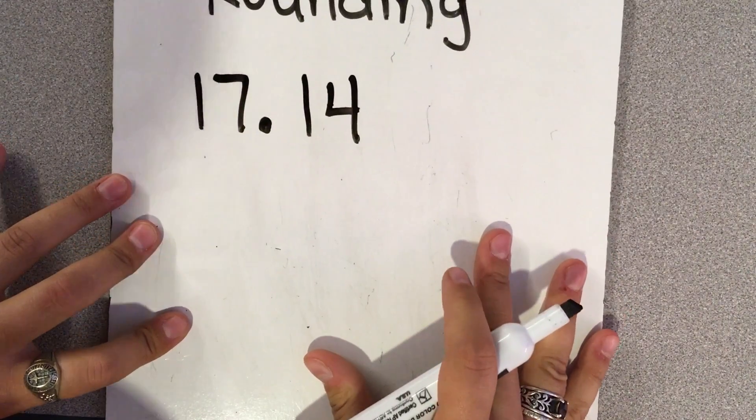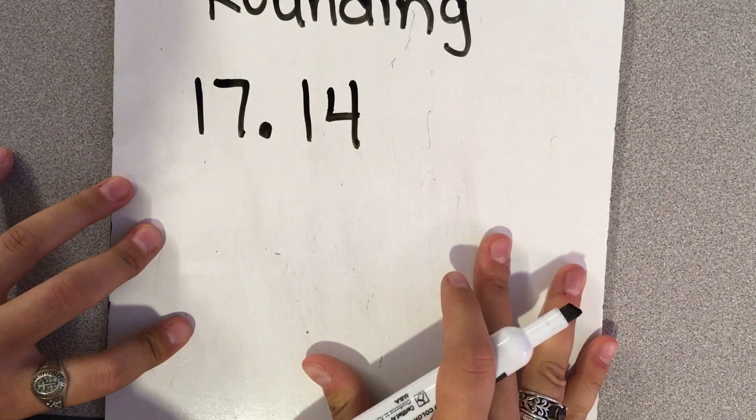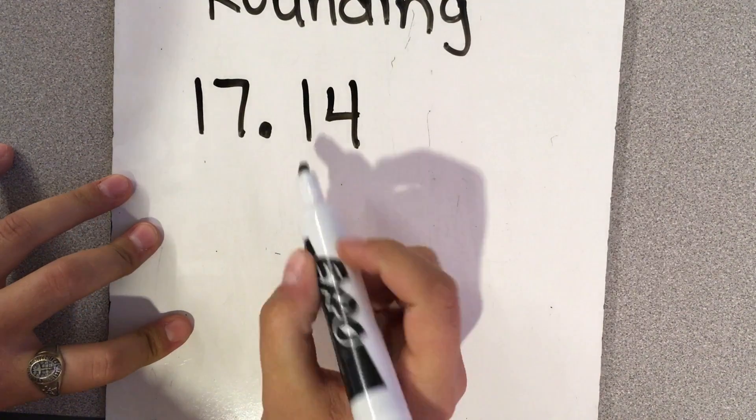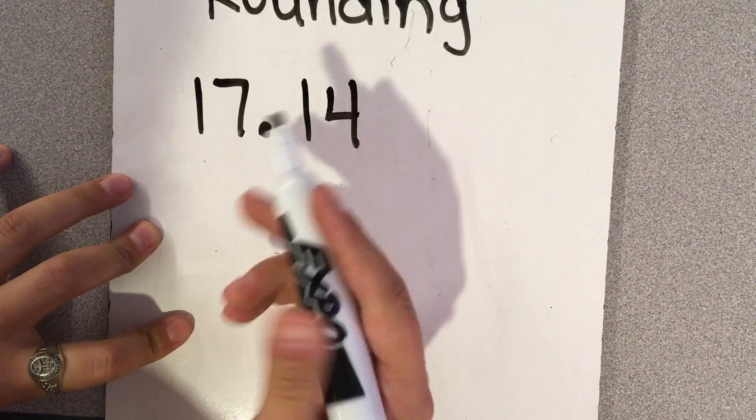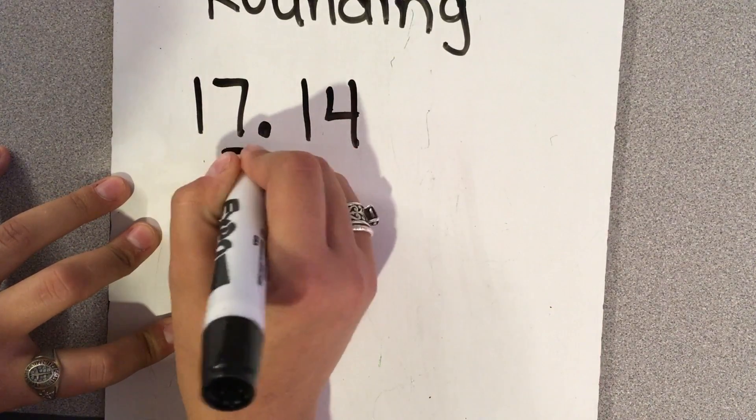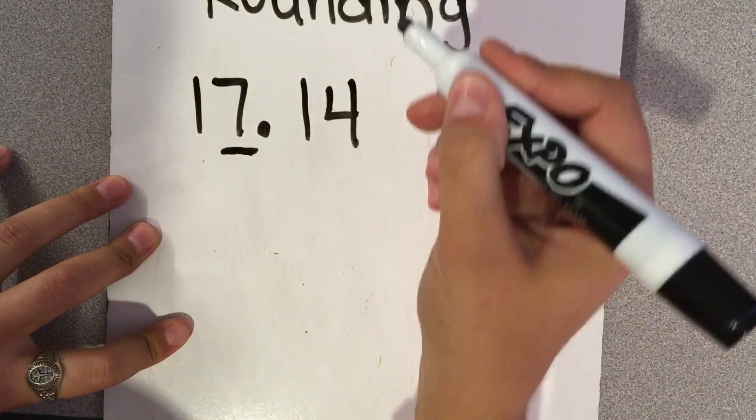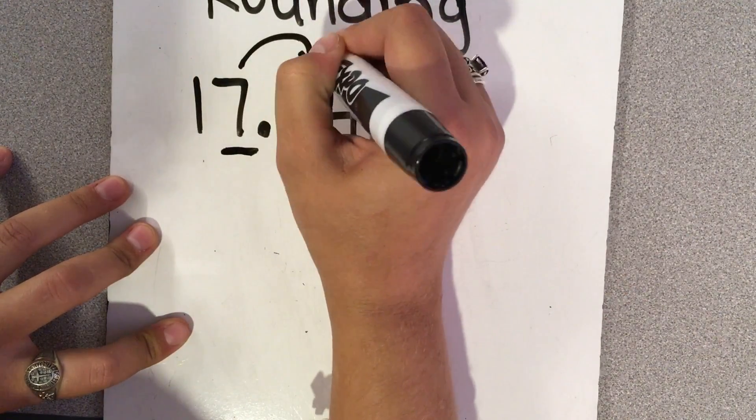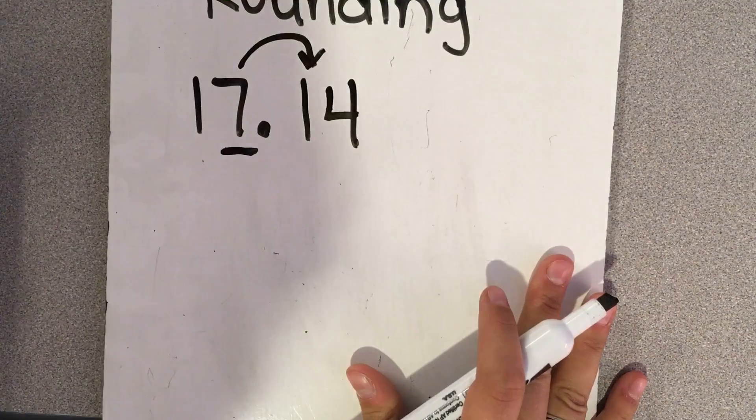If we needed to round this to the nearest whole number, that means I want to round to the ones digit, the ones place value. So whatever it's asking you to round to, you want to underline that place value. You always look next door to the right, and that number will tell you to stay the same or go up.